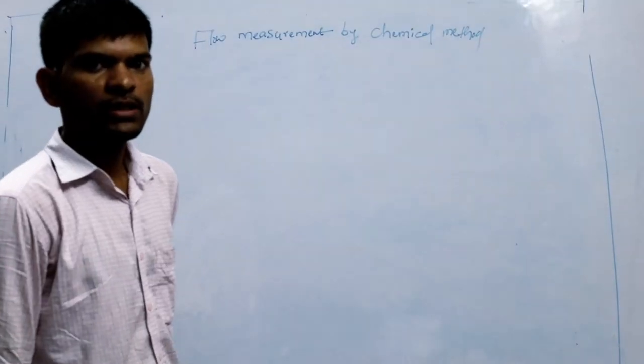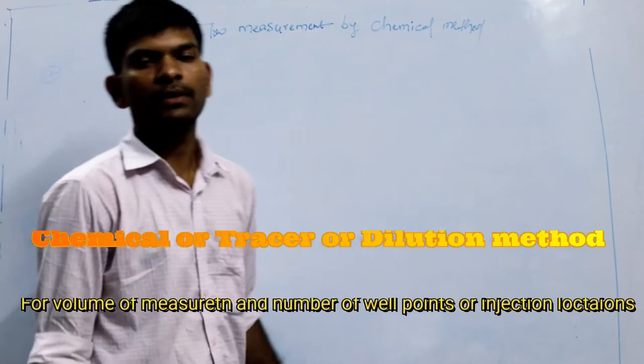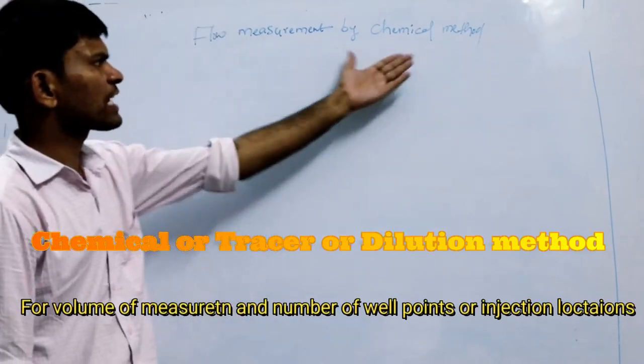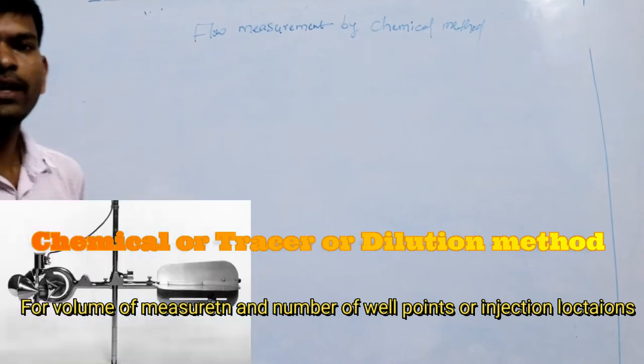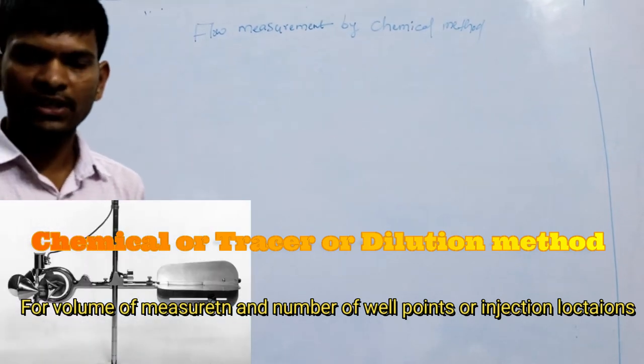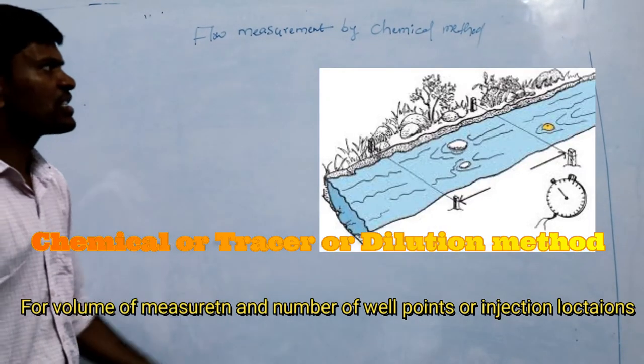Hello friends, today we'll discuss one of the most important methods for flow measurement: the chemical method. Why would you use the chemical method? It's used where you don't have access to the current meter method, fluid method, or any other method.